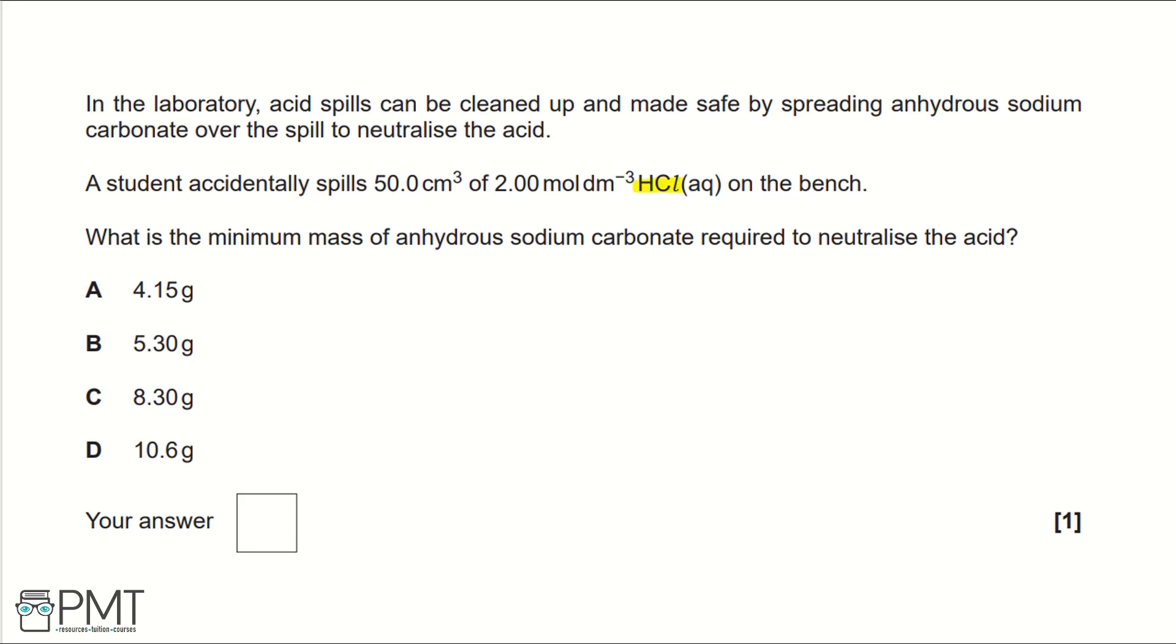So we're reacting HCl with sodium carbonate. So we would have HCl plus Na2CO3. And that would produce 2NaCl plus CO2 plus H2O. So we need two hydrochloric acids.